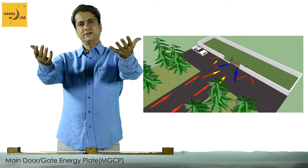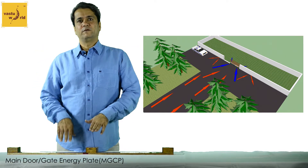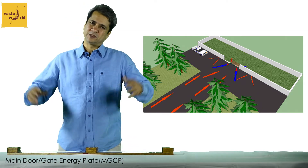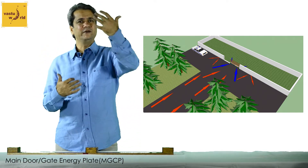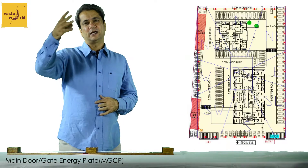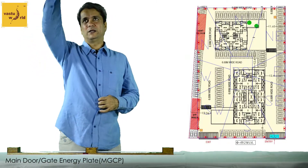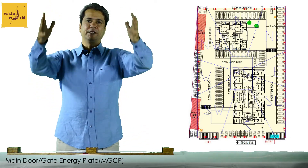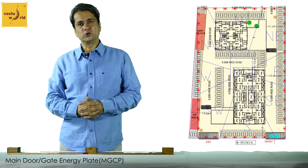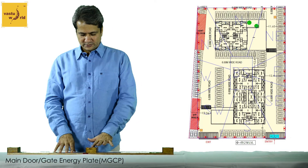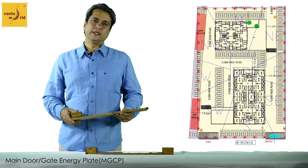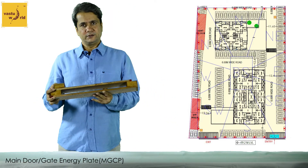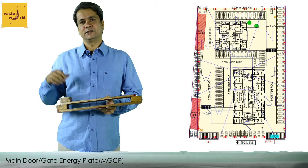This is a wonderful solution for taking care of negativity entering from your main door — when you have a main door or main gate of a property that is south-facing or southwest-facing, or where there are geostresses or negativities outside like a Nala, a pole, an electrical line, or a big tree, which we sometimes call Dwar Dosh or Main Entry Negativities. This product, called the Main Gate Energy Correction Plate, helps in throwing the negativity away and bringing in positivity.